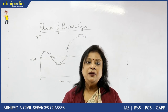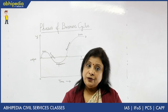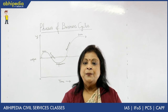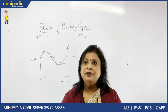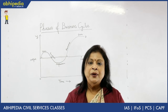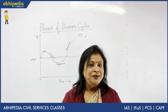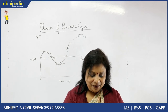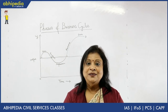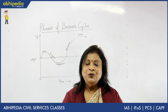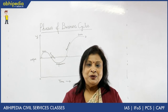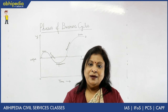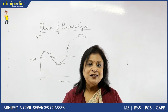During a boom, public expenditure will be reduced to some extent. During depression, the government has to increase the level of public expenditure — this is what was recommended by Lord J.M. Keynes, a very famous macroeconomist. Public debt is another instrument: during boom, when people have lots of purchasing power, the government borrows from the people.